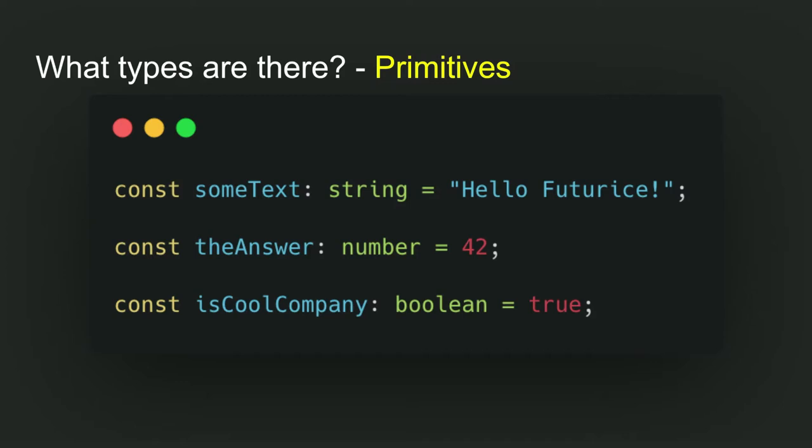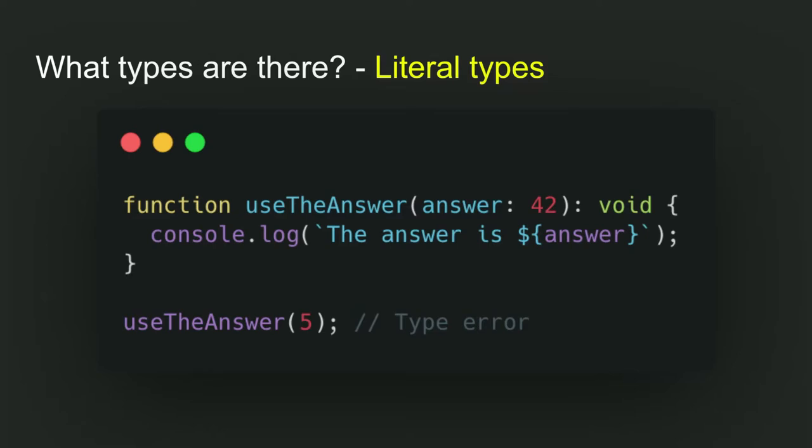The first part is just the very simple primitives like string, number and boolean. Those are pretty simple, just like in any other programming language, the fundamental types of the type system. But TypeScript also has literal types which are smaller in scope. For example this function, use the answer, only accepts 42 as an input. So not all numbers, only 42.